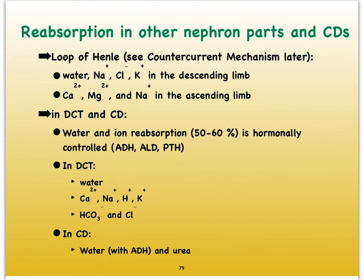A lot of reabsorption occurs in the proximal convoluted tubule — almost all organic solutes are reabsorbed there — but there is still more reabsorption of water and electrolytes more distally, meaning in the loop of Henle, the distal convoluted tubules, and the collecting ducts. So be aware that we haven't quite reabsorbed everything at the PCT.